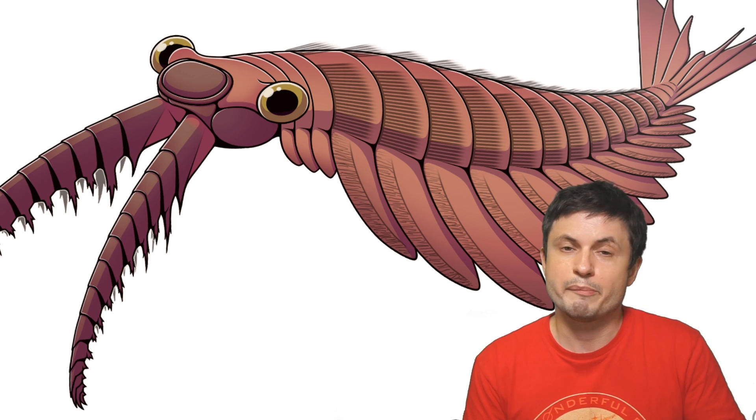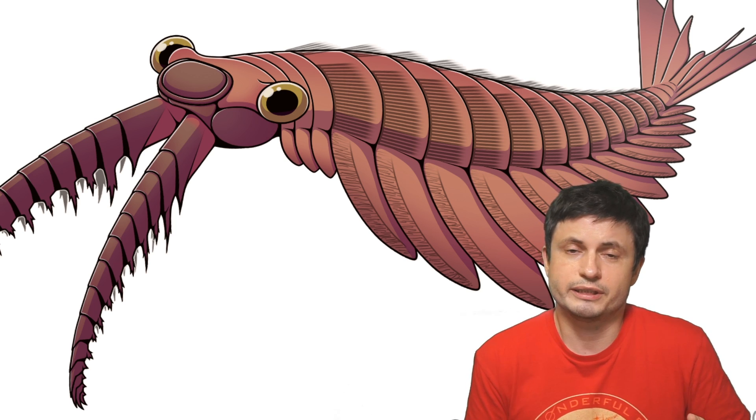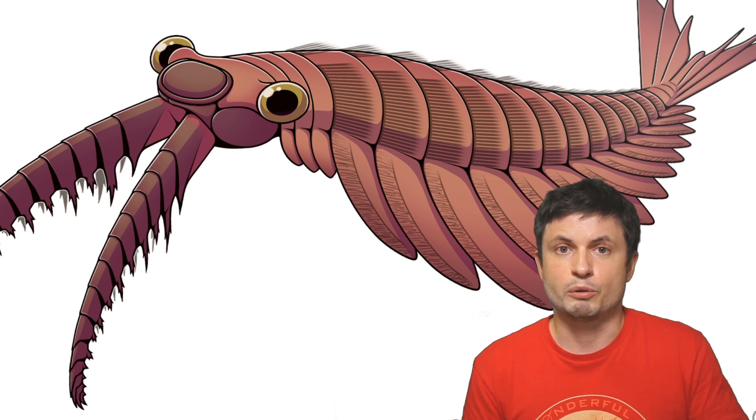Cambrian explosion refers to the time approximately 550 million years ago when animals like this, the famous animal Pikaia, or essentially ancient shrimp, were dominating the oceans and were essentially the kings of the world.